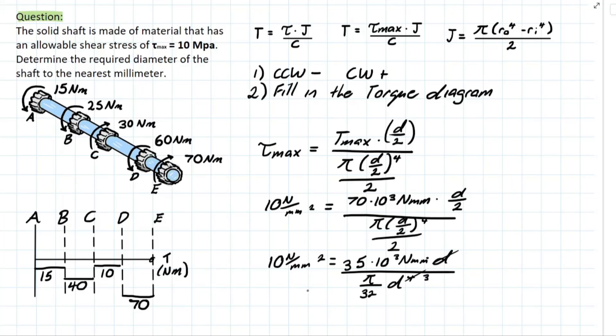And then isolating everything for your diameter, you are going to be left with the cubic root. This comes over, bring over the root. You are left with the cubic root of 35 times 10^3 newton millimetre over 10 newtons per millimetre squared times π over 32, which is going to leave you with a final answer of 32.91 millimetres.